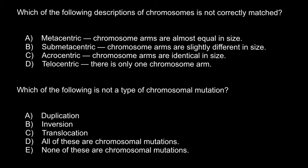Which of the following descriptions of chromosomes is not correctly matched? These are the names that stand for the specific position of the centromere on the chromosome. Answer A: metacentric — chromosome arms are almost equal in size. This is true. Imagine this is a chromosome and the centromere would be somewhere in the middle, so we call this metacentric. And answer B: